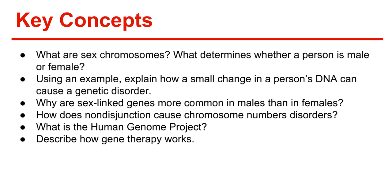Key concepts for Chapter 14: What are sex chromosomes? What determines whether a person is male or female? Using an example, explain how a small change in a person's DNA can cause a genetic disorder. Why are sex-linked genes more common in males than in females? How does nondisjunction cause chromosome number disorders? What is the Human Genome Project? And describe how gene therapy works.